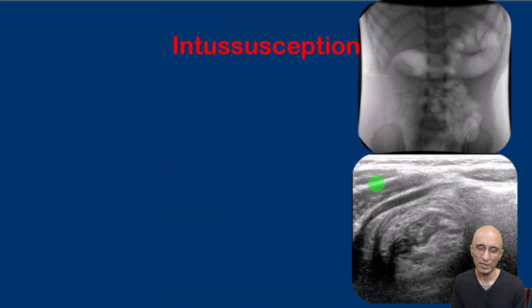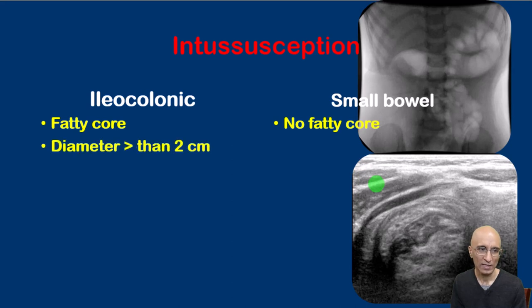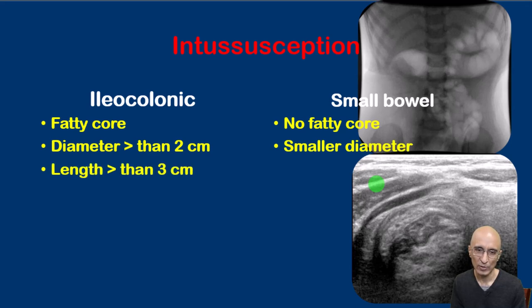When encountering a patient with intussusception, it is important to differentiate ileocolonic intussusception from small bowel to small bowel intussusception. Ileocolonic intussusception classically will have a fatty core, which is not seen in small bowel intussusception. The diameter of ileocolonic intussusception is much larger — typically more than two centimeters — whereas small bowel intussusception is usually less than two centimeters. Ileocolonic intussusceptions are also much longer, usually greater than three centimeters, whereas small bowel to small bowel intussusception is much shorter.